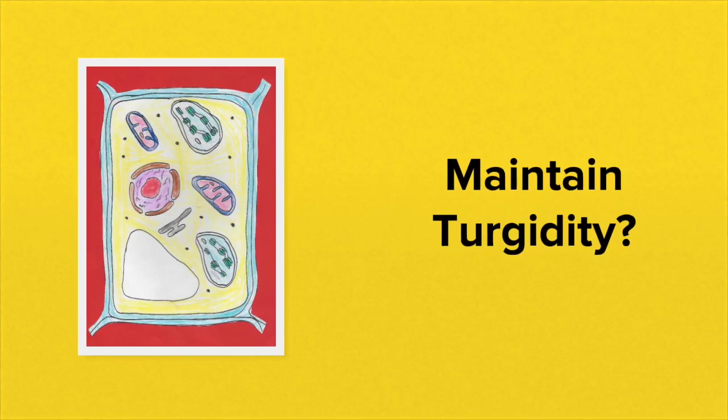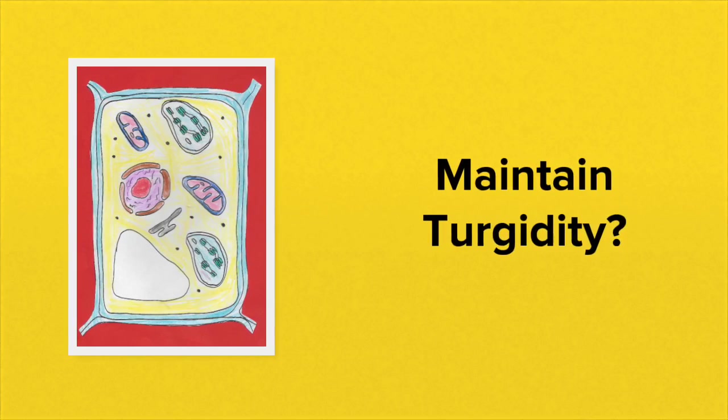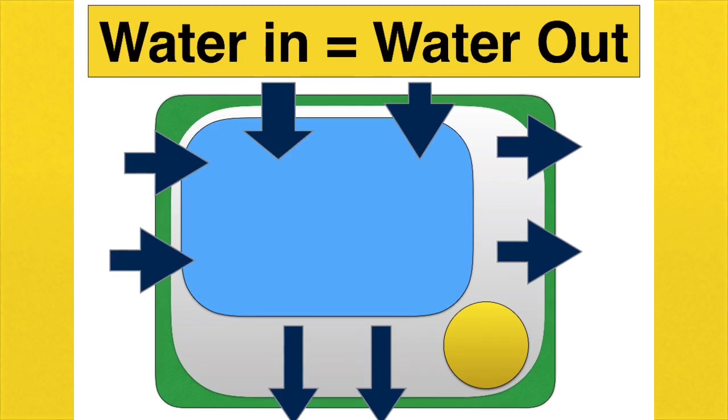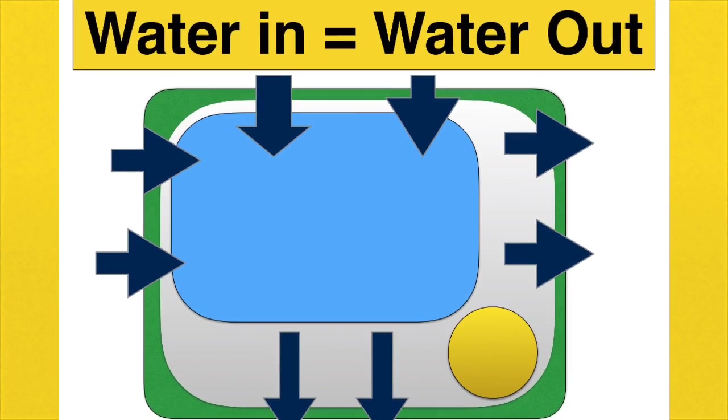So how will these plant cells maintain turgidity or stay turgid over long periods of time? Well, it's a balancing act. The water entering the cell, so the net movement of water into the cell, would have to match the net movement of water out of the cell.